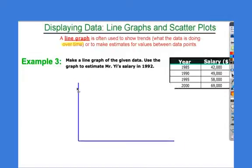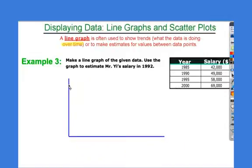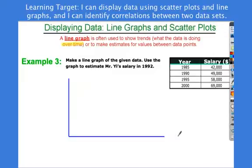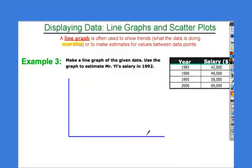So for a line graph, you've all made one before. But one thing to keep in mind, the independent variable always goes on the x-axis and the dependent goes on the y. So you've got to think here, between year and salary, which one is going to be independent? Which one is not going to be affected by the other?